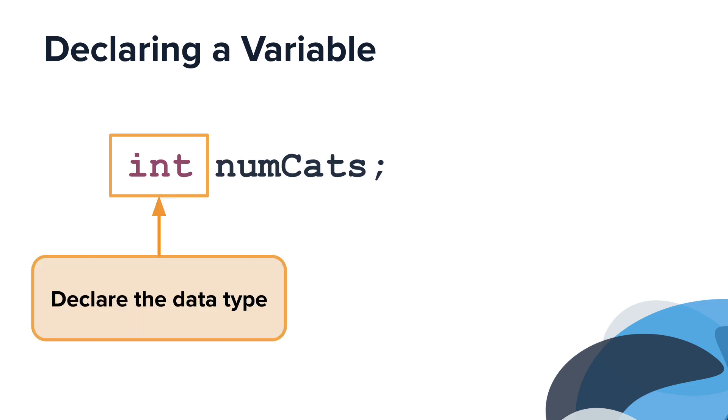The first thing you do to create a variable is declare its data type. You do this by writing the name of the data type you want stored in the variable. In this case, you want to store an integer value, so you use the data type int. This one word creates an empty box and specifies the type of value that the box can hold.